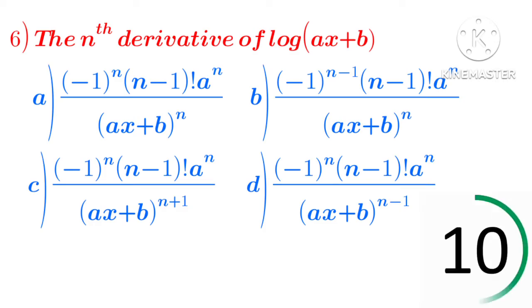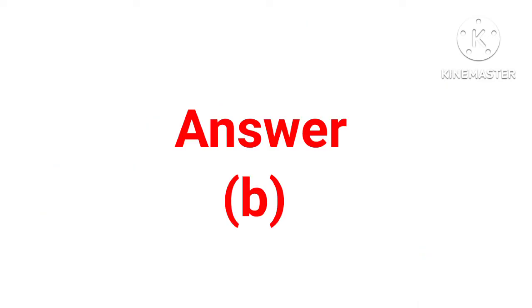Next sixth: the nth derivative of log of ax plus b. Options: a through d, involving expressions with minus 1 to the power n, n minus 1 factorial, a to the power n, divided by ax plus b to the power n. Answer b is the correct answer.